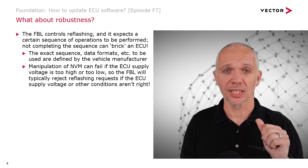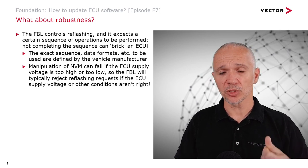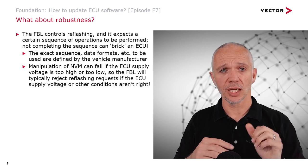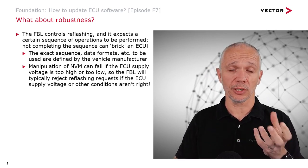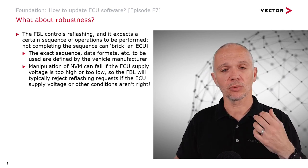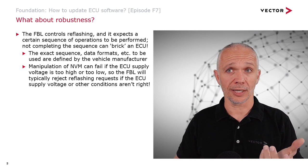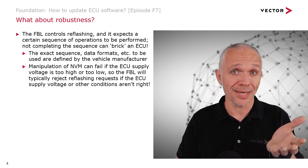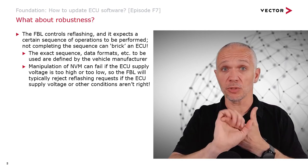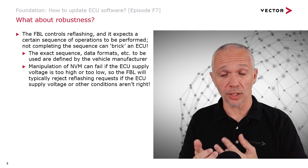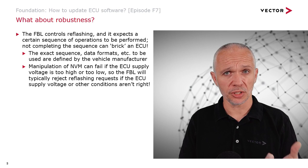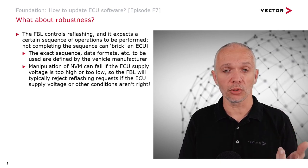It's also worth mentioning that when we want to manipulate the non-volatile memory, we need the supply voltage for the ECU to be within a certain range. Typically, the flash bootloader will reject programming requests if the voltage is not correct. It will also look for other conditions — such as the vehicle speed being zero, the transmission being in park, or the parking brake being applied — before allowing programming to start.